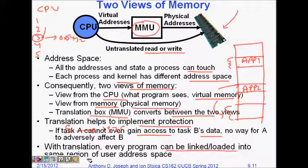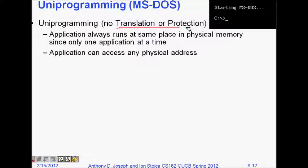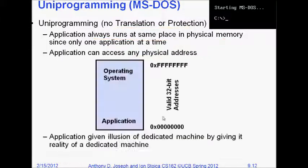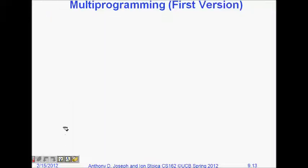Translation helps implement protection — if task A cannot access task B's data, there is no way for A to affect B. With translation, every program can be linked and loaded in the same region of user address space. In MS-DOS, only one application could run at a time, so there was no need for translation or protection — the application always ran at the same place in physical memory and could access any physical address.